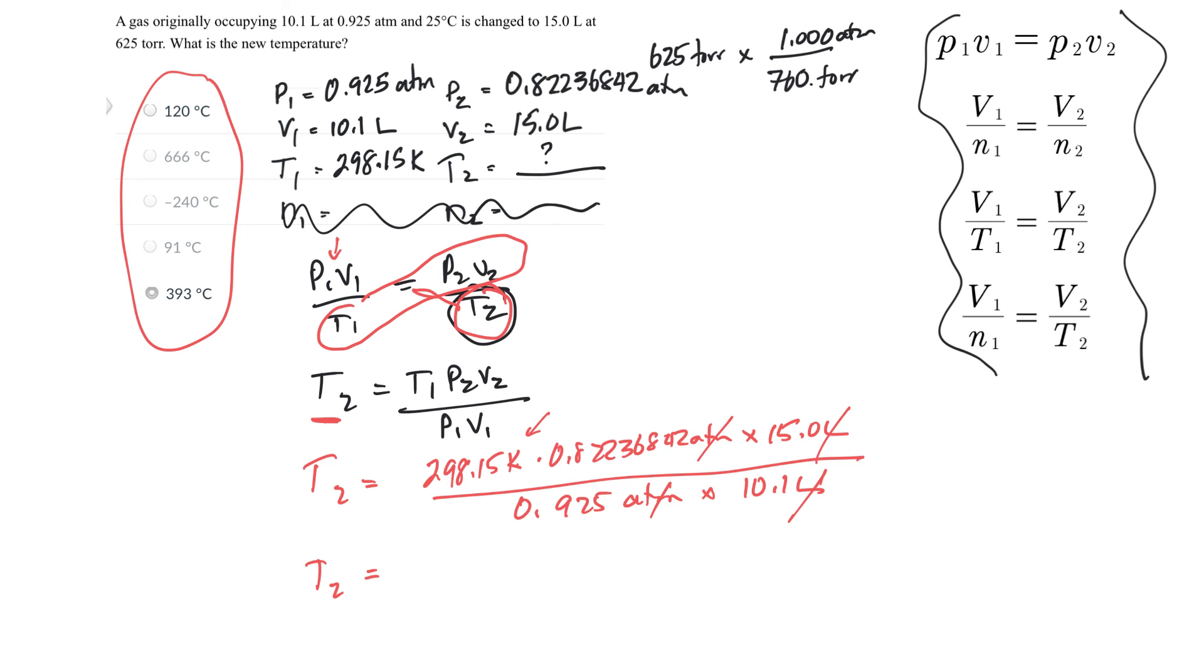Oh, look, they gave Celsius. So I'm going to have to convert to Celsius at the end. All right, so that times. Okay, so I'm getting 393.6673 Kelvin. So if I subtract 273.15, that gives me a temperature of 120.517 degrees Celsius.